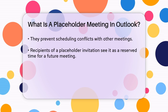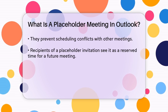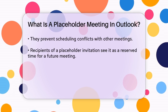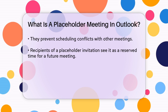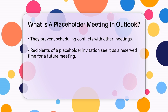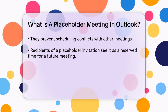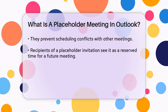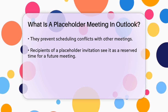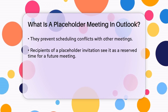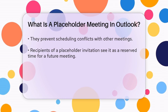When you receive a placeholder meeting invitation, it means that the organizer is reserving that time for a future meeting but hasn't provided all the details. You can't interact with the meeting in the same way you would with a regular meeting invitation, as it's just a placeholder until more information is available.